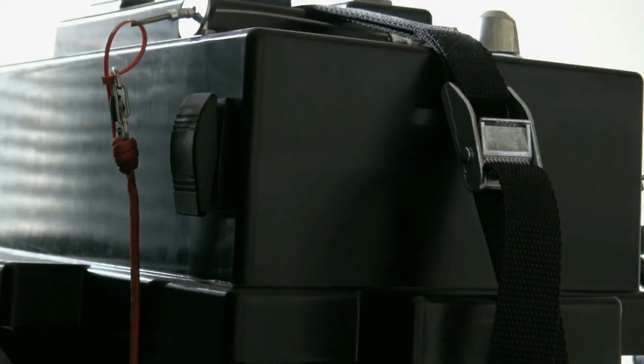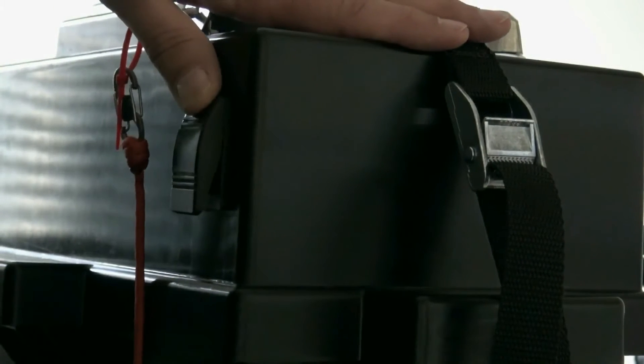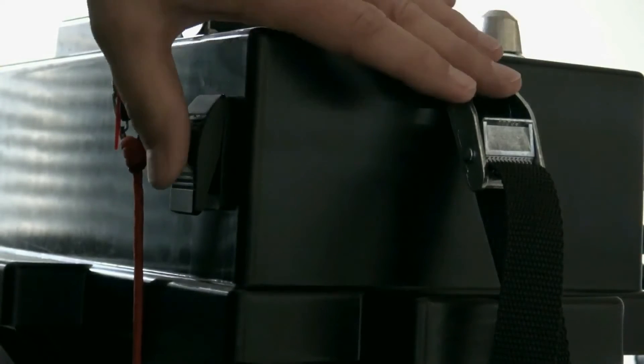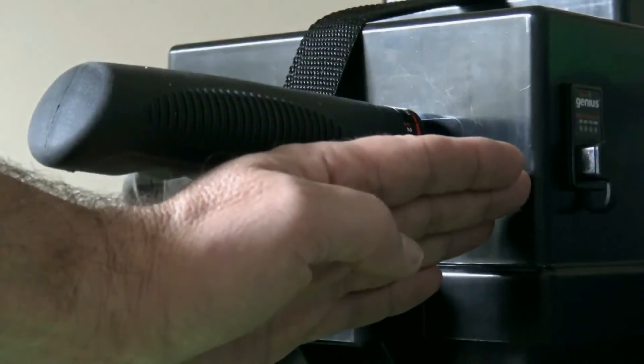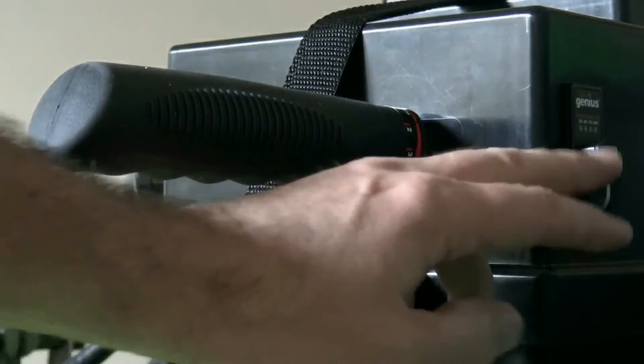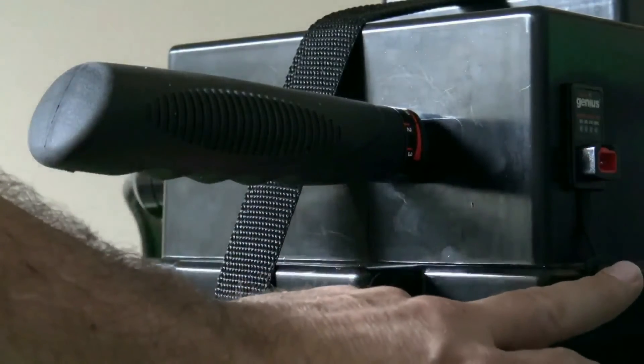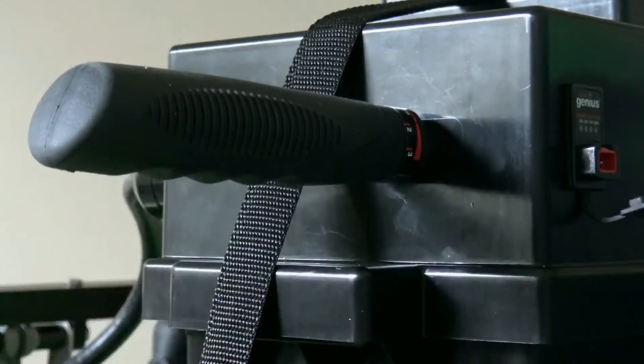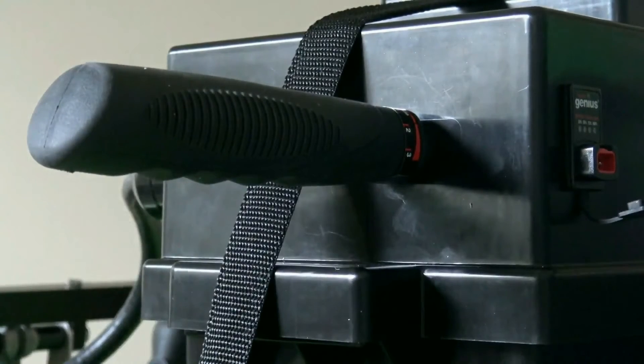The actuator is controlled by a rocker switch on the seat side of the pod. Also on the seat side of the pod is a battery capacity monitor with a built-in charge port. You can actually charge the battery without removing it from the pod.